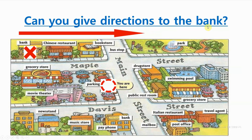Can you give directions to the bank? If we start here at the circle and we want to get to the bank, can you give these directions? We can start by saying: turn left onto Main Street until you get to Maple Street. At Maple Street, turn left and go one block. It's on your right, across from the grocery store and next to the Chinese restaurant.